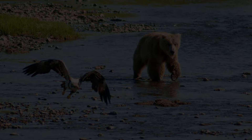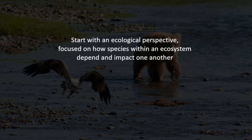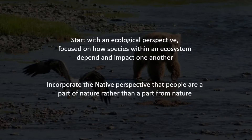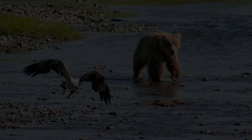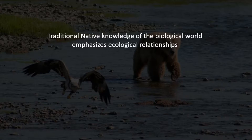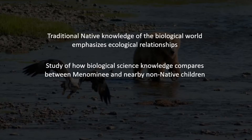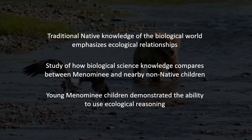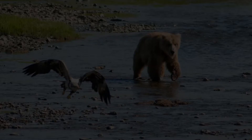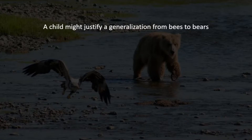In teaching about the biological world, it's important to start with an ecological perspective focused on how species within an ecosystem depend on and impact one another. Incorporate the native perspective that people are a part of nature rather than apart from nature. Traditional native knowledge of the biological world emphasizes ecological relationships, focusing on interrelationships among species and how environmental features in a habitat are dependent upon one another. In a study by Bang, Medin, and Atran comparing biological science knowledge between members of the Menominee tribe and a nearby rural non-native community in Wisconsin, even the youngest Menominee children, ages 4–6, demonstrated the ability to use ecological reasoning. For example, a child might justify a generalization from bees to bears because a bee could sting a bear, or a bear might acquire an attribute from a bee by eating its honey.